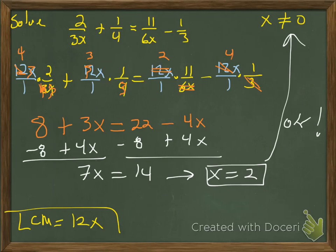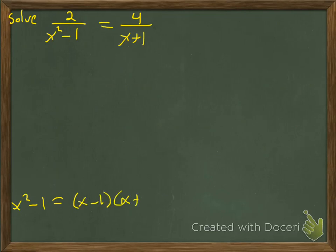Happy times. We can plug 2 in and check if we wanted to, but I'll let you do that on your own. We'll move on to one more. Let's say we want to solve 2/(x²-1) = 4/(x+1). We're going to factor here so I can find what my LCM is. x²-1 is (x-1)(x+1), that's our difference of squares. Then we have our other denominator of x+1. So our LCM is just (x-1)(x+1), and that's what we're going to multiply everybody by.